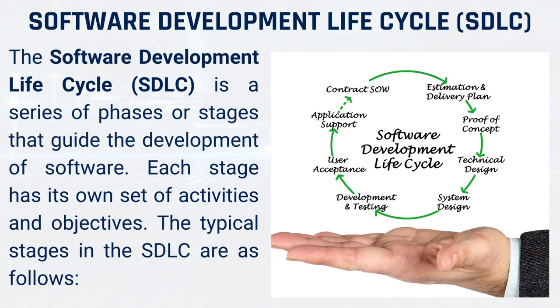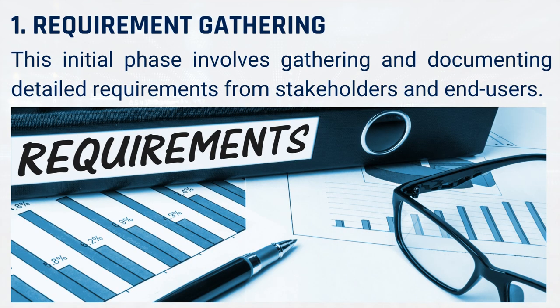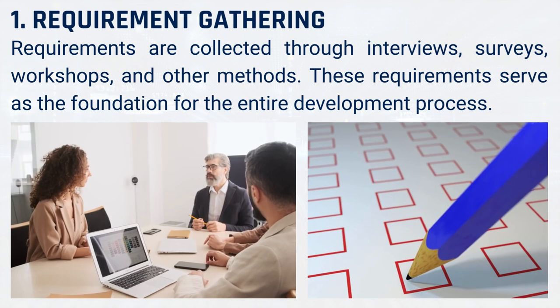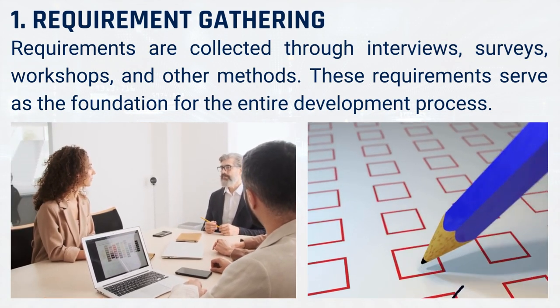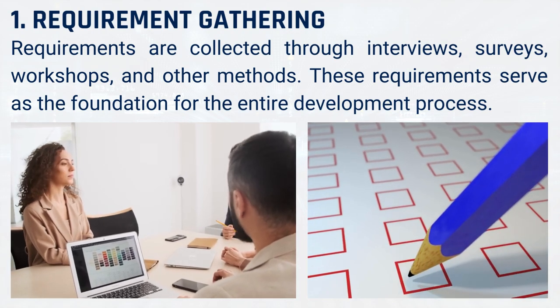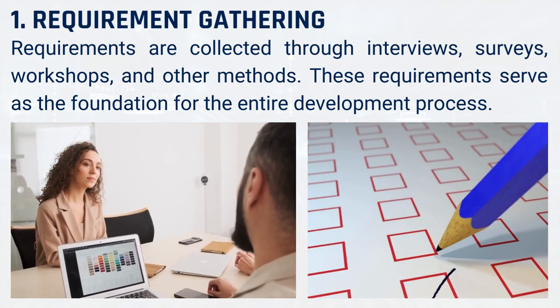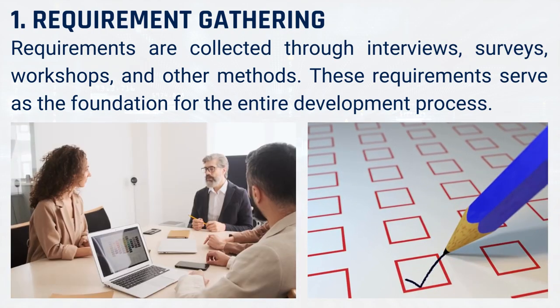The software development lifecycle (SDLC) is a series of phases or stages that guide the development of software. Each stage has its own set of activities and objectives. The typical stages are as follows: 1. Requirement gathering — this initial phase involves gathering and documenting detailed requirements from stakeholders and end users. Requirements are collected through interviews, surveys, workshops, and other methods. These requirements serve as the foundation for the entire development process.